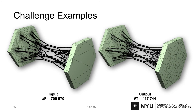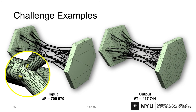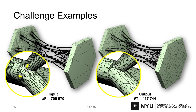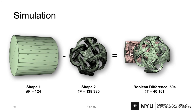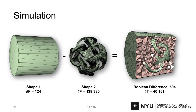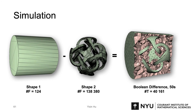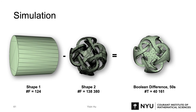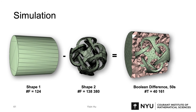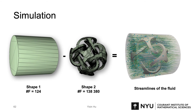Another challenging example shown on the left has self-intersected beams with fine features, and in the output on the right, the self-intersections are all gone and the thin beams are preserved. This example shows boolean operation between two shapes. We extract the volume of shape 2 from the volume of shape 1, and get a tetrahedral mesh for the pipe carved in the interior. We can use this tetrahedral mesh for Stokes fluid simulation — on the right, we let the fluid go through the pipe from left to right and show the streamlines.